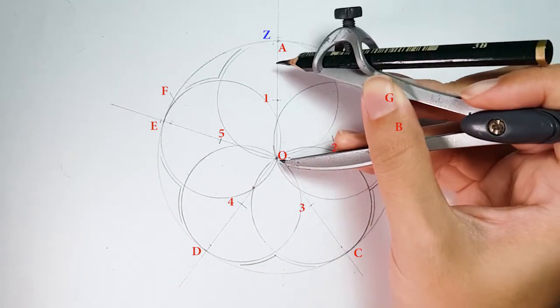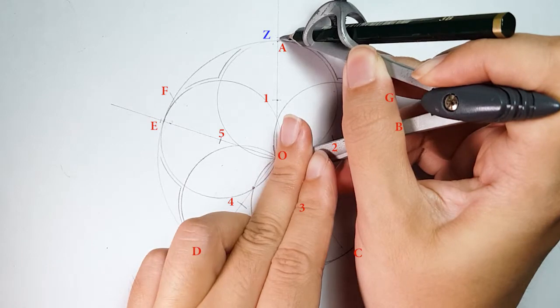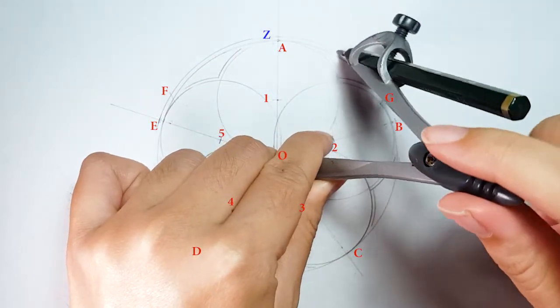Next, place your compass on point O and adjust to point Z, then draw a full circle.